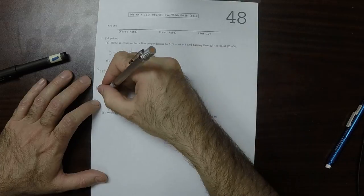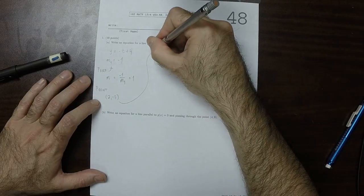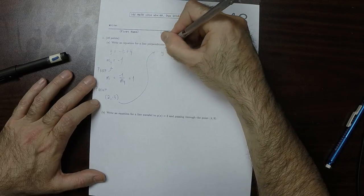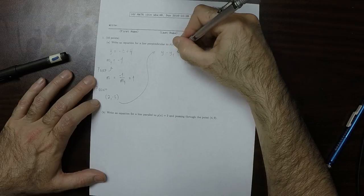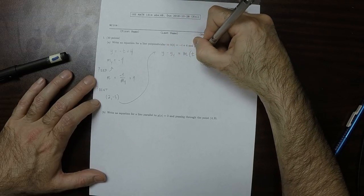And a point that's on the line was given to us: 2, negative 3. So y minus y1 is m multiplied by t minus t1.